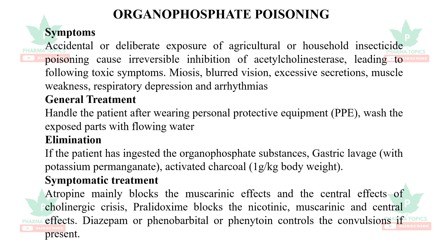Organophosphate is a poison caused by inhalation. It causes inflammation, secretions, muscular weakness, respiratory depression, and cardiac problems. Treatment includes Personal Protective Equipment. Elimination via gastric lavage and activated charcoal. Atropine is used for muscarinic effects, central effects, and nicotinic effects. Pralidoxime is the standard antidote for nicotinic and muscarinic effects. Diazepam and phenytoin are used for seizures.